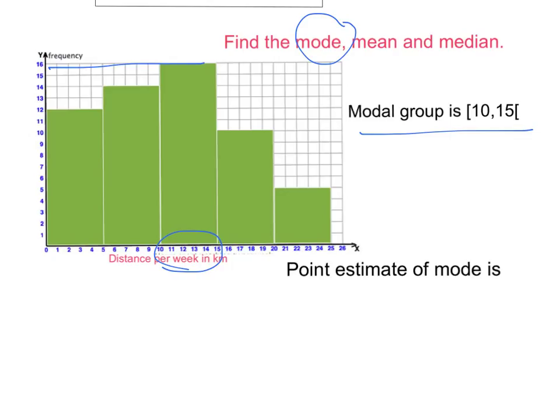The point estimate of the mode is just the mid value of this group. So it's 10 plus 15 divided by 2, or 25 divided by 2. That is 12.5. So the estimate, the mode here is 12.5.